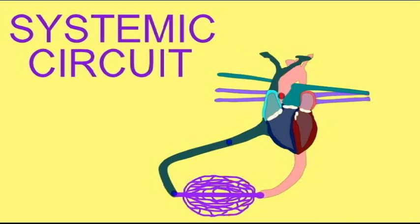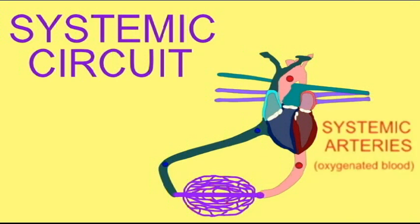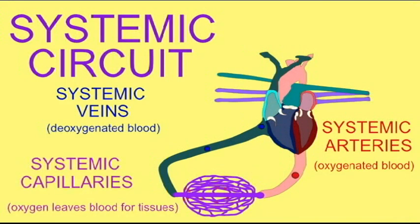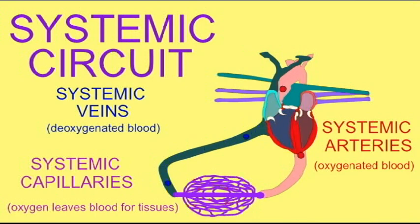The left ventricle is the pump of the systemic circuit. In the systemic circuit, oxygenated blood is pumped from the left ventricle through the aorta, through the systemic arteries of the body. These reach the body's tissues where they enter the systemic capillaries.